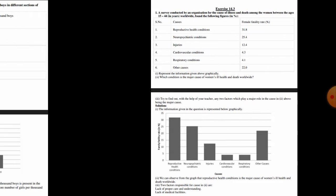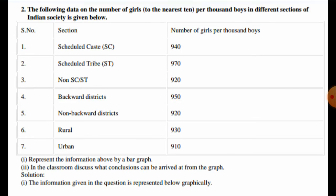In question number two, we have data on the number of girls to the nearest thousand per thousand boys in different sections of Indian society. The values are: Scheduled Caste 940, Scheduled Tribe 970, Non-SC/ST 920, backward districts 950, non-backward district 920, rural 930, and urban 910.